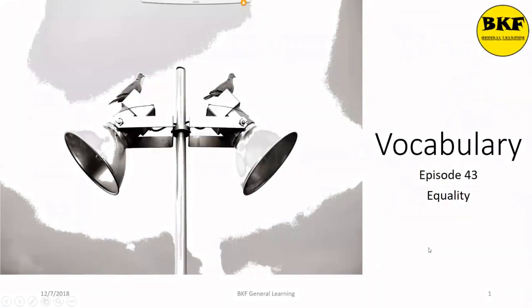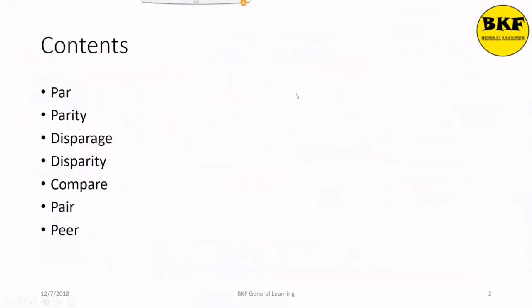Hello everyone, a very warm welcome to all of you. This is Vocabulary episode 43: Equality. These are the words we are going to discuss in today's session: Par, Parity, Disparage, Disparity, Compare, Pair, and Peer. So let's start.